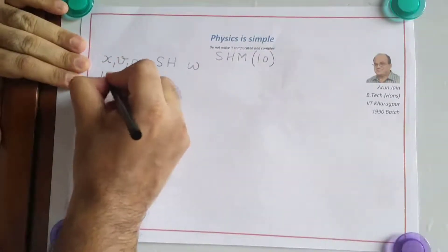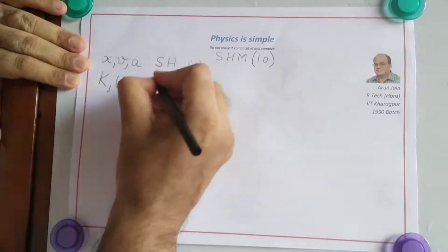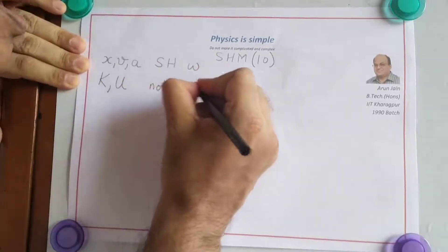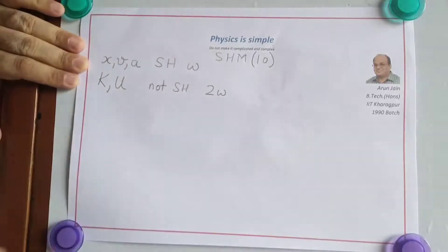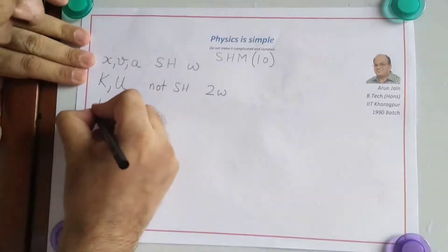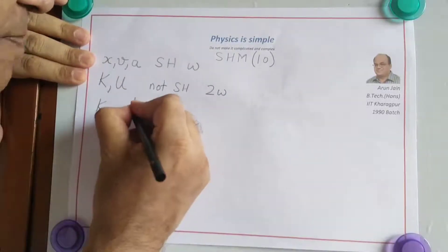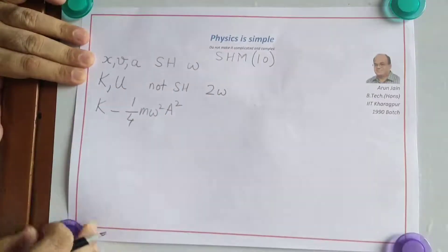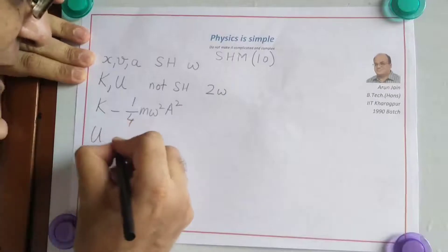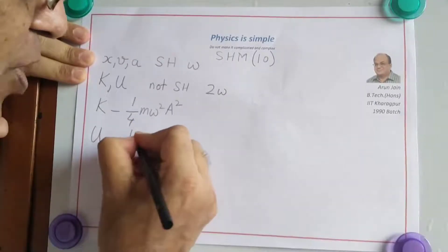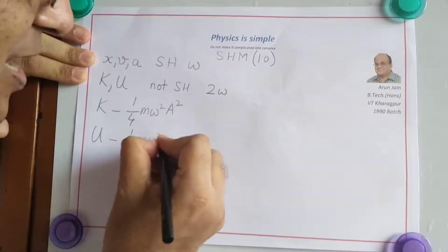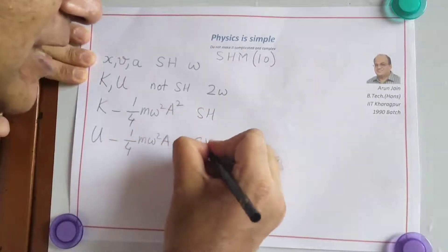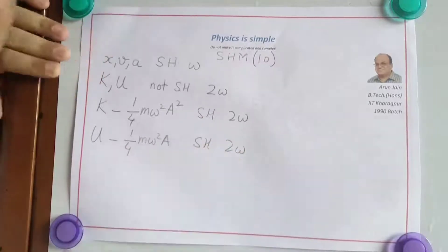Kinetic energy and potential energy oscillate not simple harmonically with angular frequency 2 omega. Here, K = 1/4 M omega square A square and similarly U = 1/4 M omega square A square will oscillate simple harmonically with angular frequency 2 omega.